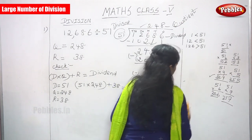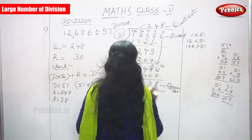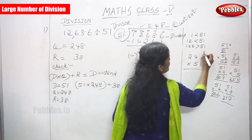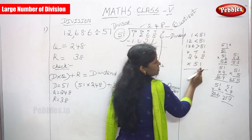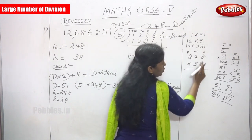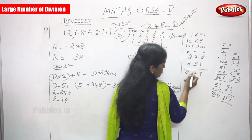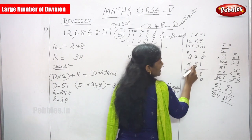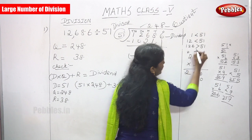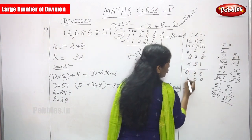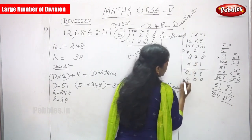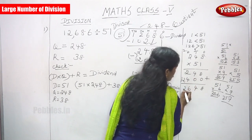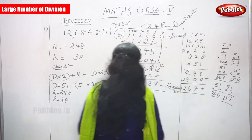Let me do the multiplication. Write 248 first, then multiply by 51. Multiply by ones (1): 1×8=8, 1×4=4, 1×2=2 — giving 248. Multiply by tens (5): write a zero in ones place, then 5×8=40, write 0 carry 4; 5×4=20+4=24, write 4 carry 2; 5×2=10+2=12 — giving 1240. Add both: 248 + 1240 = 12,648. So 51×248 = 12,648.